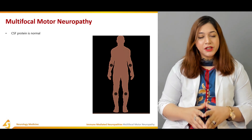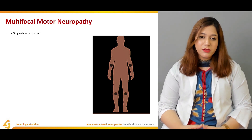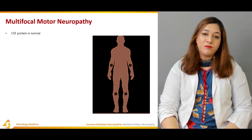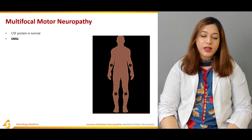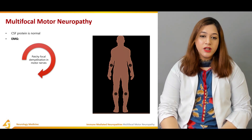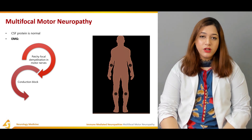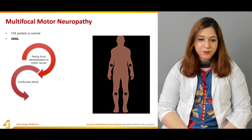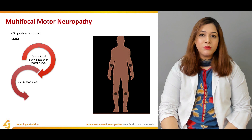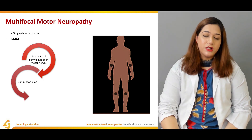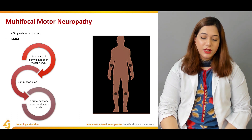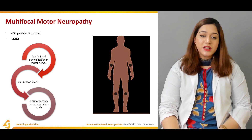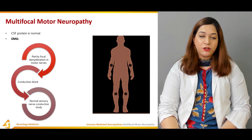The diagnostic criteria includes CSF examination and electrophysiologic findings. The CSF protein is usually normal in multifocal motor neuropathy. Electrophysiologic findings reveal patchy focal demyelination in motor nerves, sparing the sensory nerves. Conduction block will be found, defined as reduced compound muscle action potential amplitude. Disconduction block occurs along non-myelin-associated areas, and there is a normal sensory nerve conduction study.